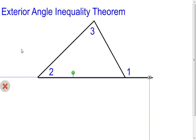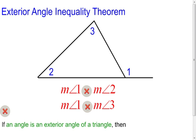Well, in this theorem, it's going to look at just the relationship between the measure of angle 1, the exterior angle, and the measure of, say, angle 2, one of the remote interior angles.